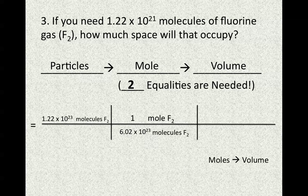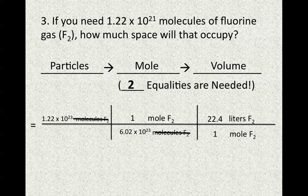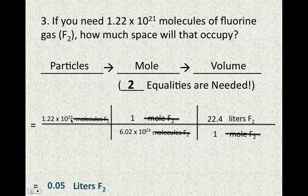Our final conversion factor goes from moles to volume, relating moles to liters. We know that 1 mole of fluorine gas at STP equals 22.4 liters of fluorine. Crossing out units in the numerator and denominator, molecules and moles cancel, leaving liters — which is what we're looking for. Using the correct value of 10 to the 21st, you end up with 0.05 liters of fluorine gas.